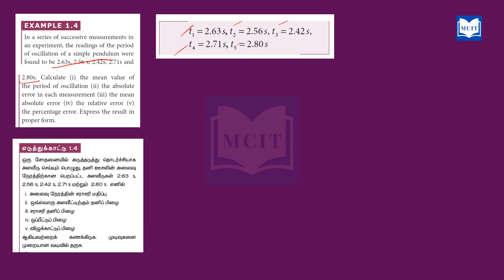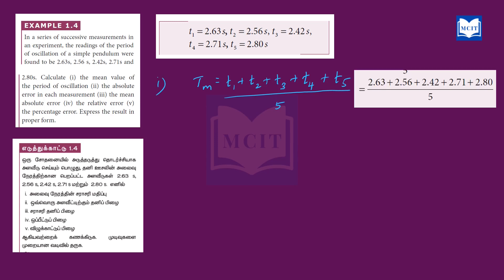Now we are going to calculate the mean. The mean value is obtained by adding all values and dividing by the number of readings. The formula is: tm equals T1 plus T2 plus T3 plus T4 plus T5, divided by 5.